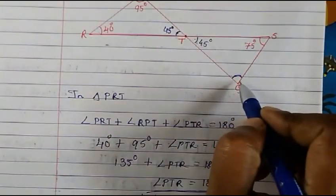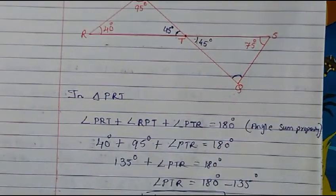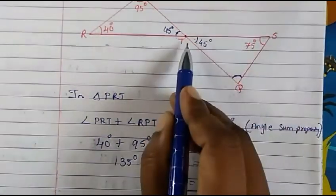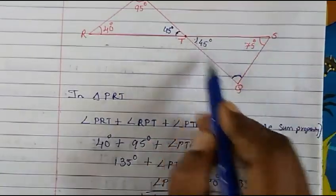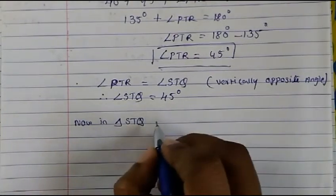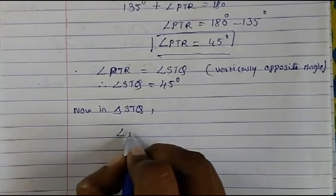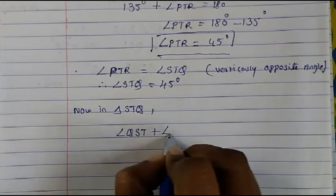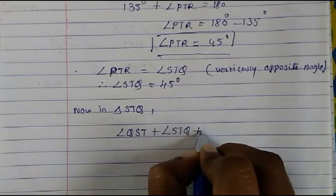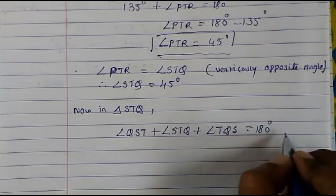Now we have to actually find out angle SQT. In triangle STQ, by the angle sum property, we write: angle QST plus angle STQ plus angle TQS equals 180 degrees.